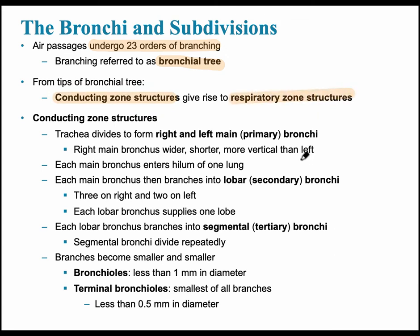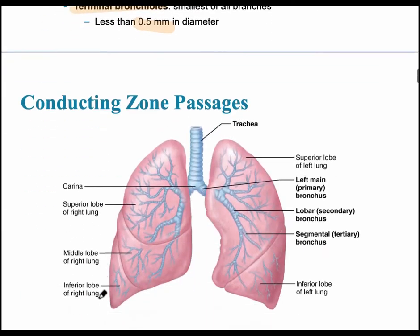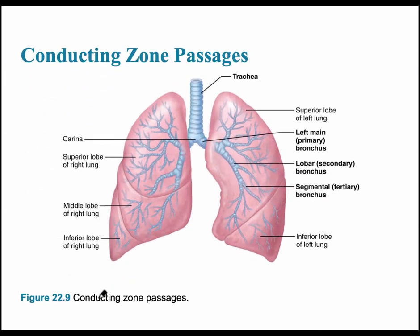The conducting zone begins where the trachea divides to form the right and left primary bronchi. As the bronchi increase in number, their diameter decreases significantly. When they decrease in diameter to less than one millimeter, they're called bronchioles, finally ending at the terminal bronchioles — the smallest branches, less than half a millimeter in diameter. This marks the end of the conducting zone.